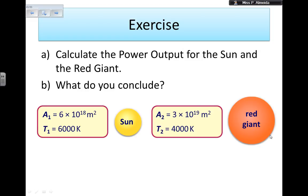Area, because I'm talking about the surface area that is facing outside. And the area for the red giant is 3 times 10 to the power of 19 meters squared. Temperature of the sun at the surface is 6,000 Kelvin. And the red giant is a cooler star, is 4,000 Kelvin.